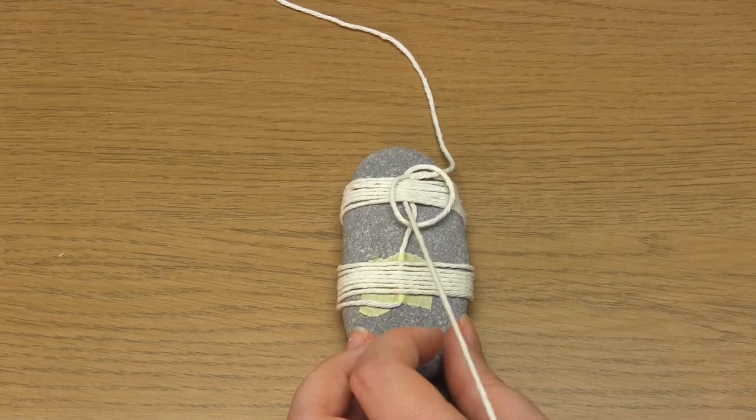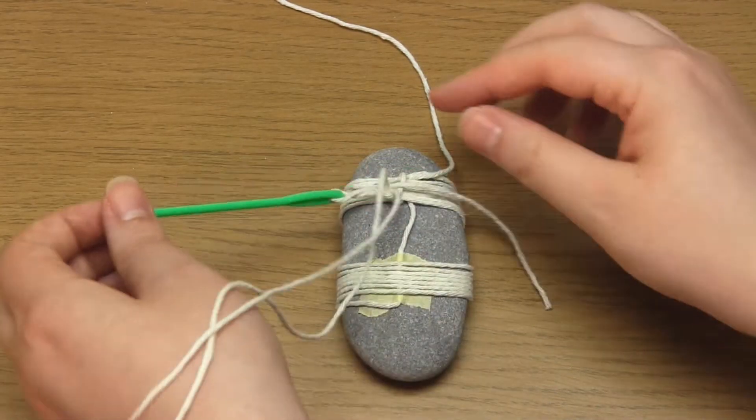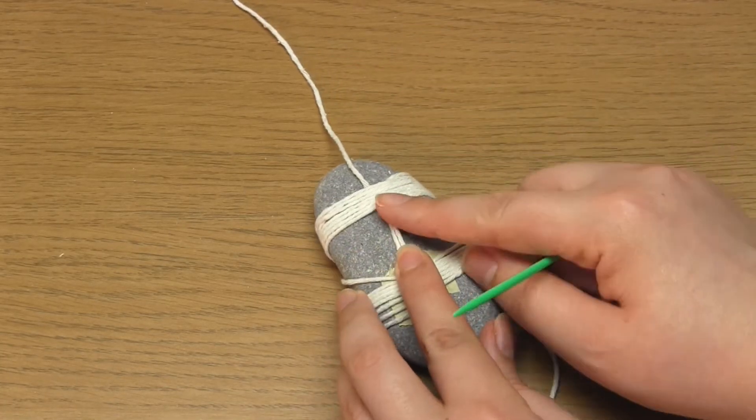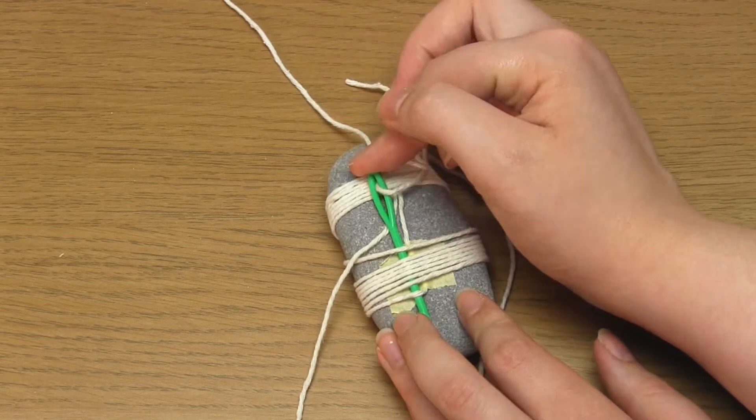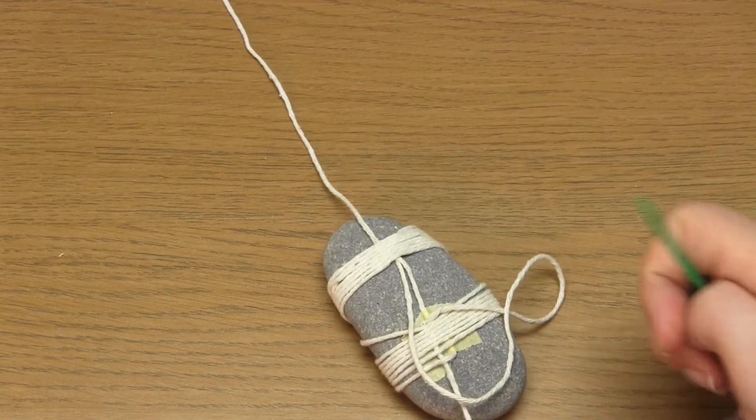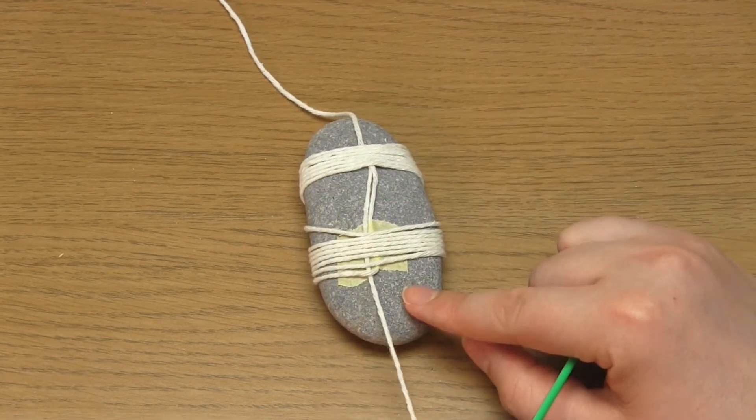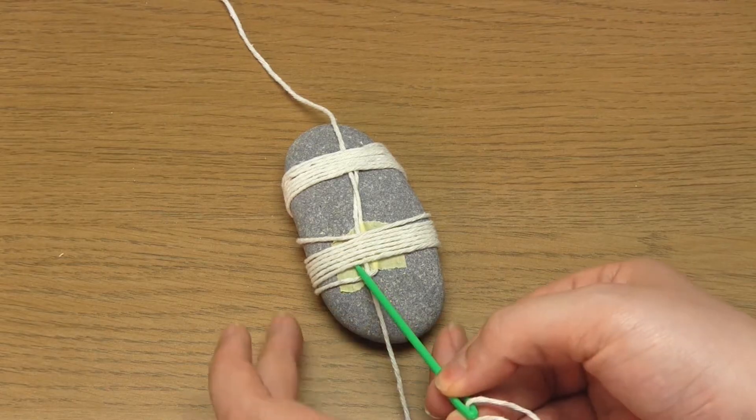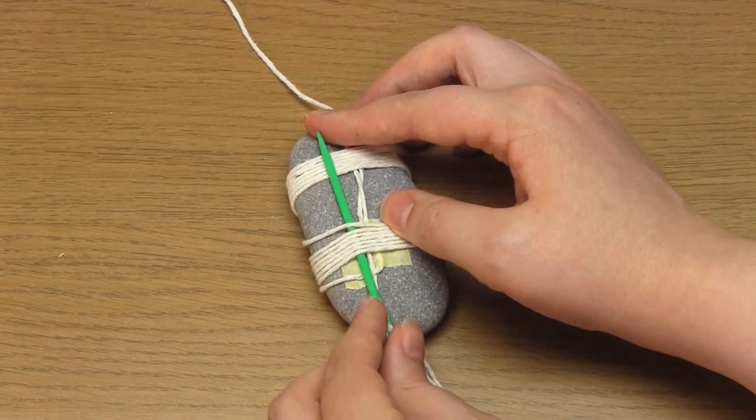You'll see that I accidentally tied a knot, so here I'm just sorting that out. Then go back over this lowest strand, but under the rest of the strands above, moving upwards.